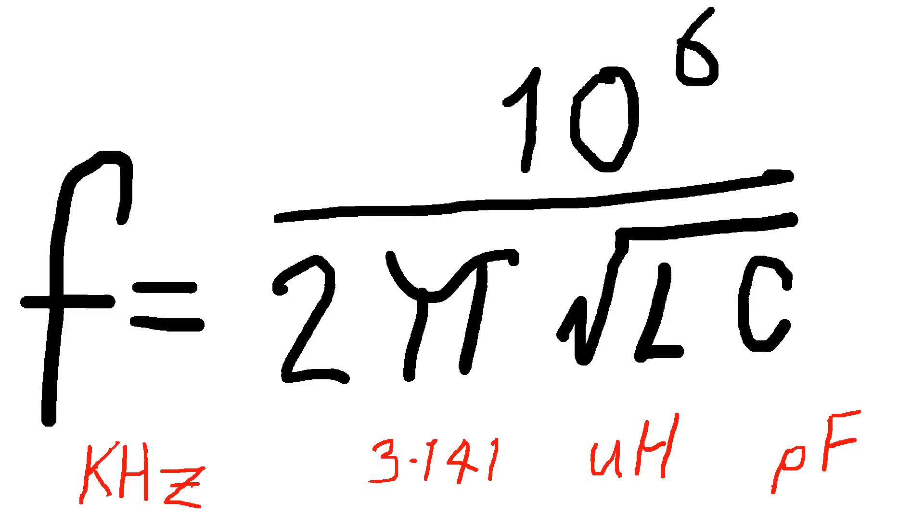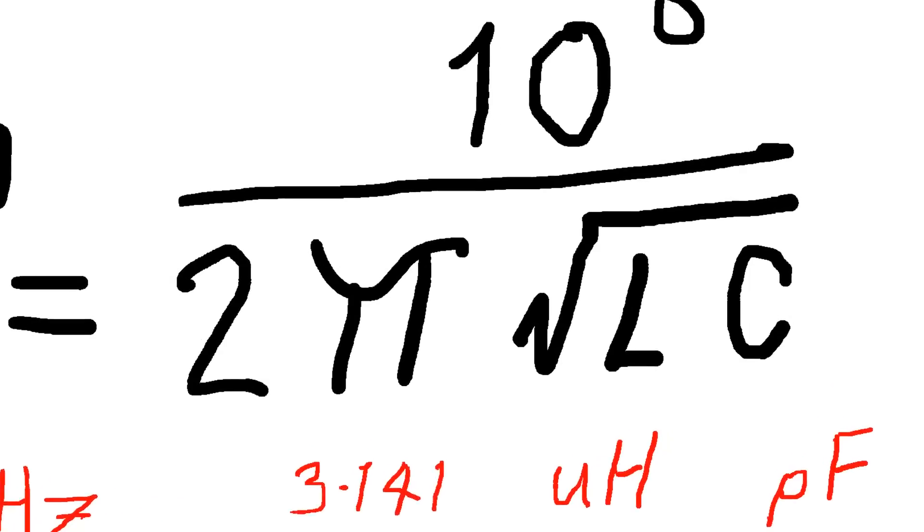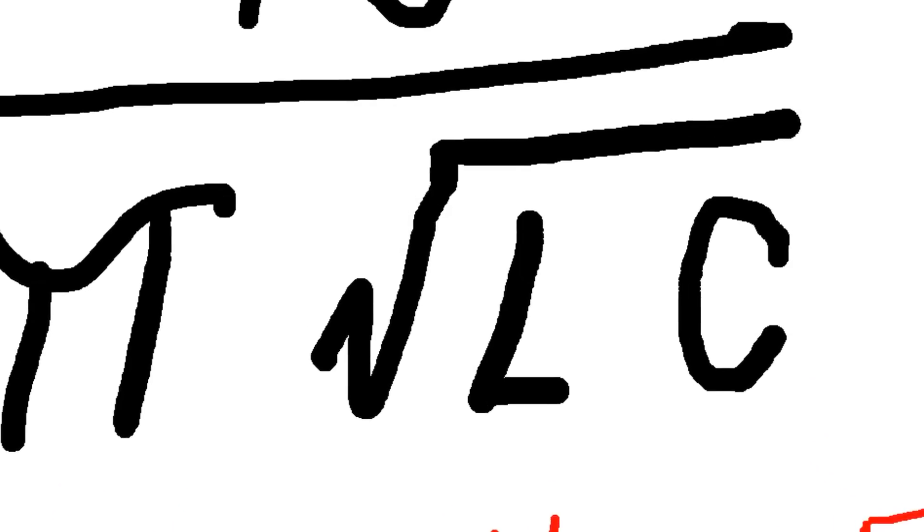If you're involved with radio, if you're involved with other things, then you may not want to work in kilohertz and picofarads. But both formulas are correct, they just work in different values. So the sizes of the numbers change, but the principle is exactly the same. Okay, so what does it all mean? What does it matter?